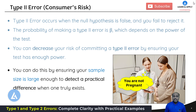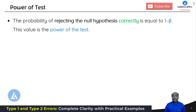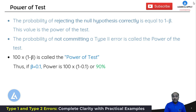Let's understand the concept of power in more detail. The probability of rejecting the null hypothesis correctly is equal to 1 minus beta — this value is the power of test. That means the probability of not committing a type 2 error is called the power of test. The power of the test is calculated using the formula: 100 multiplied by (1 minus beta). For example, if beta equals 0.1, then the power of test will be 1 minus 0.1, which equals 90%.